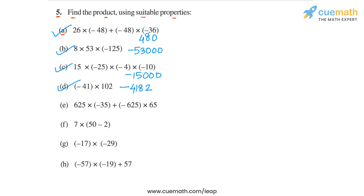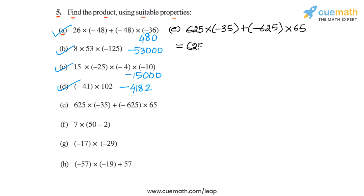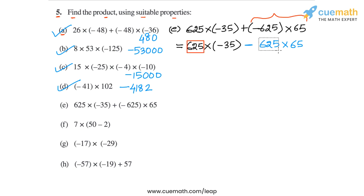Now we go to part E, where we calculate 625 into minus 35 plus minus 625 into 65. We note that minus 625 into 65 is negative, so we rewrite it as minus of 625 into 65. We observe that 625 is common in both terms, so we take it out, writing 625 into the bracket with minus 35 minus 65.